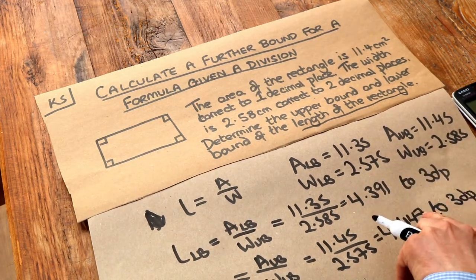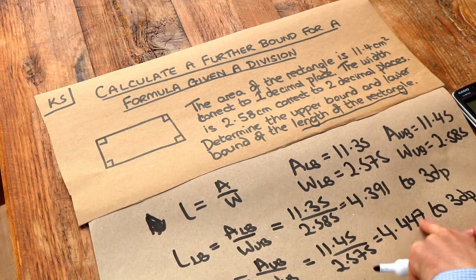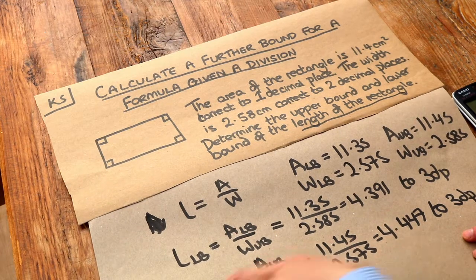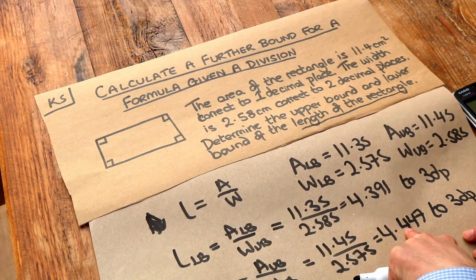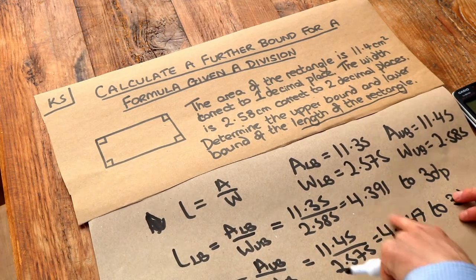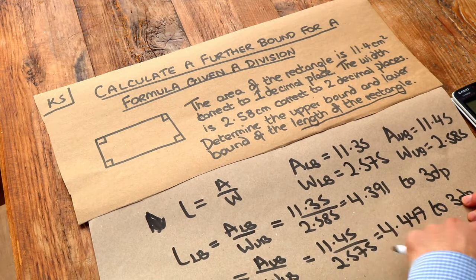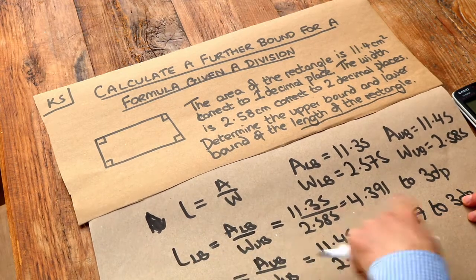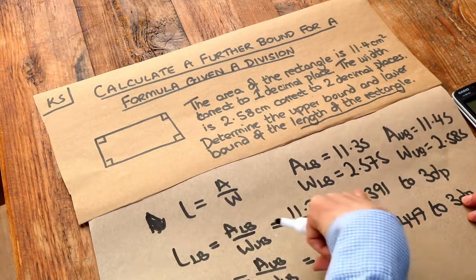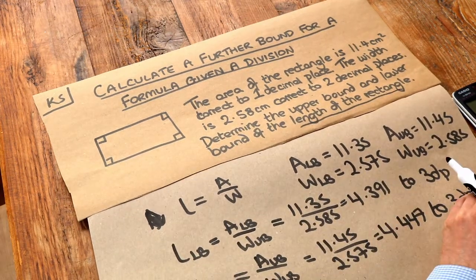So therefore, this is the biggest the length could possibly be of the rectangle, and this is the smallest it could be. The length of the rectangle is going to be anywhere between those two values.